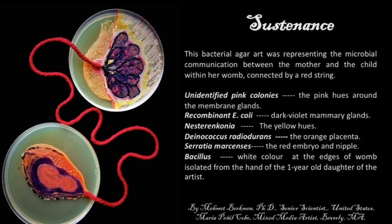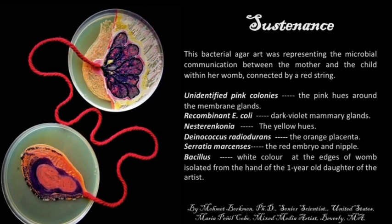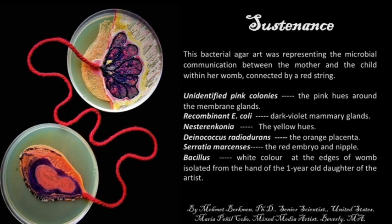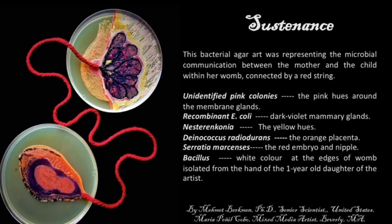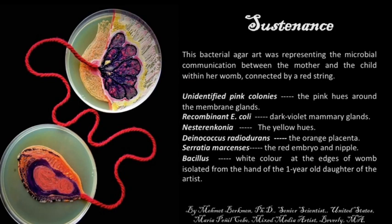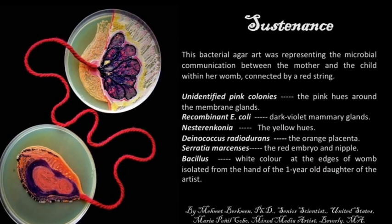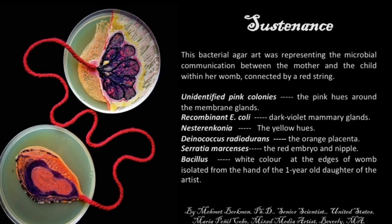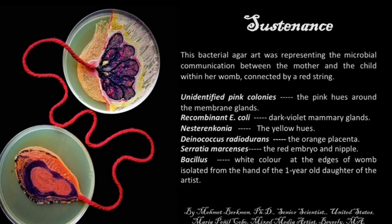The yellow hues are Nisterinconia. The orange placenta is Linococcus regidurans. The red embryo and the red navel is Serratia marcescens. The white Bacillus at the edge of the womb were isolated from the hand of the one-year-old daughter of the artist, continuing the microbial connection between the mother and her child.